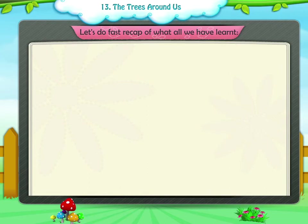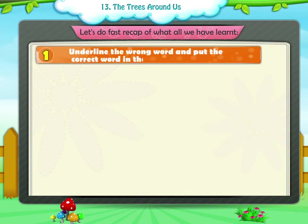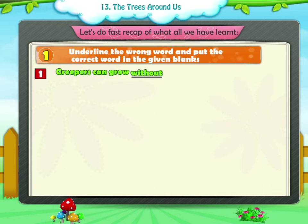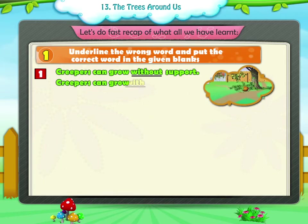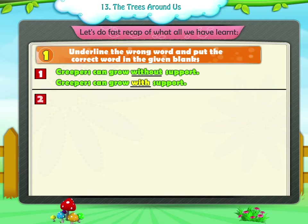Let's do a fast recap of what all we have learnt. Exercise 1: Underline the wrong word and put the correct word in the given blanks. Statement 1: Creepers can grow without support. Correction: Creepers can grow with support.